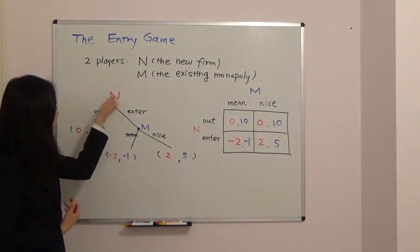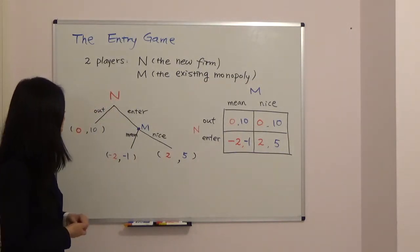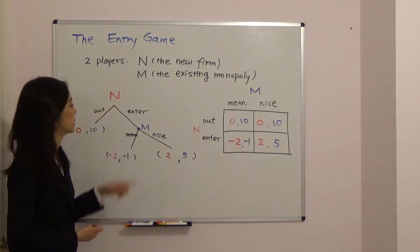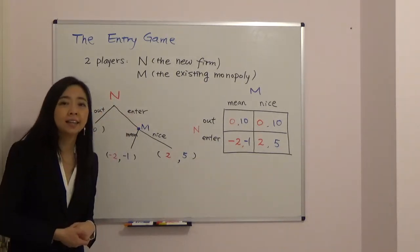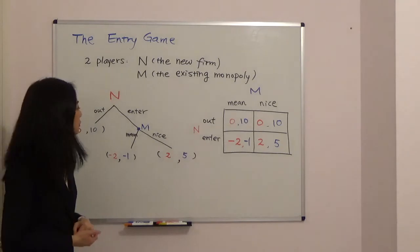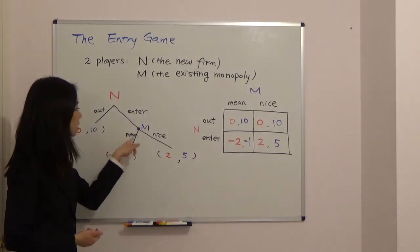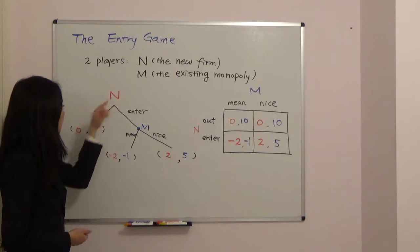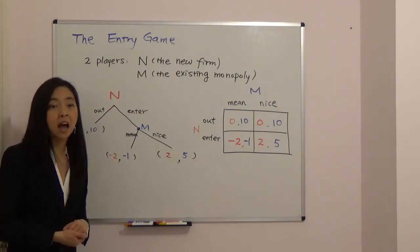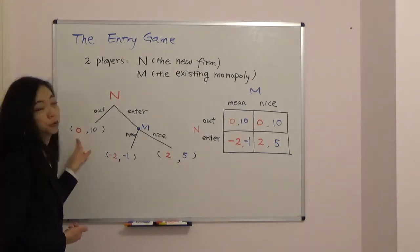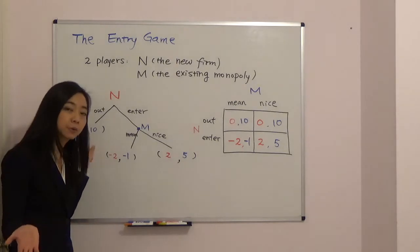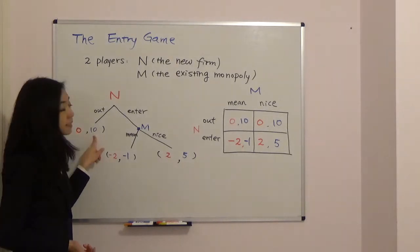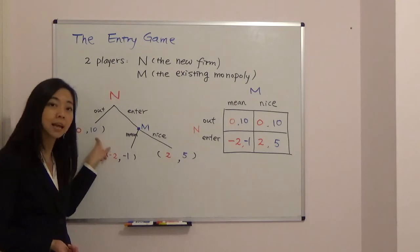The strategies for the new firm are to stay out or to enter, and the strategy of the monopoly is to play mean or play nice. If the new firm chooses to stay out, the new firm gets nothing because staying out means no money, and the existing monopoly gets ten million dollars.